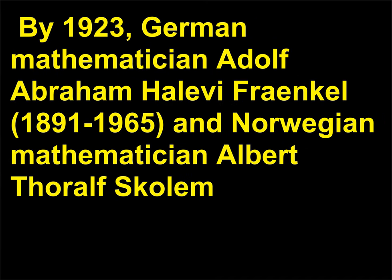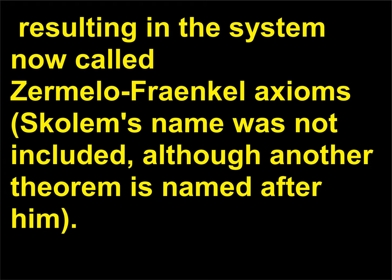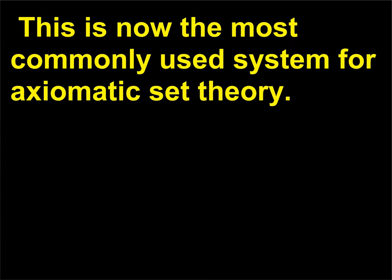By 1923, German mathematician Adolf Abraham Halevi Fraenkel (1891–1965) and Norwegian mathematician Albert Thoralf Skolem (1887–1963) independently improved Zermelo's axiomatic system, resulting in the system now called the Zermelo-Fraenkel axioms. Skolem's name was not included, although another theorem is named after him. This is now the most commonly used system for axiomatic set theory.